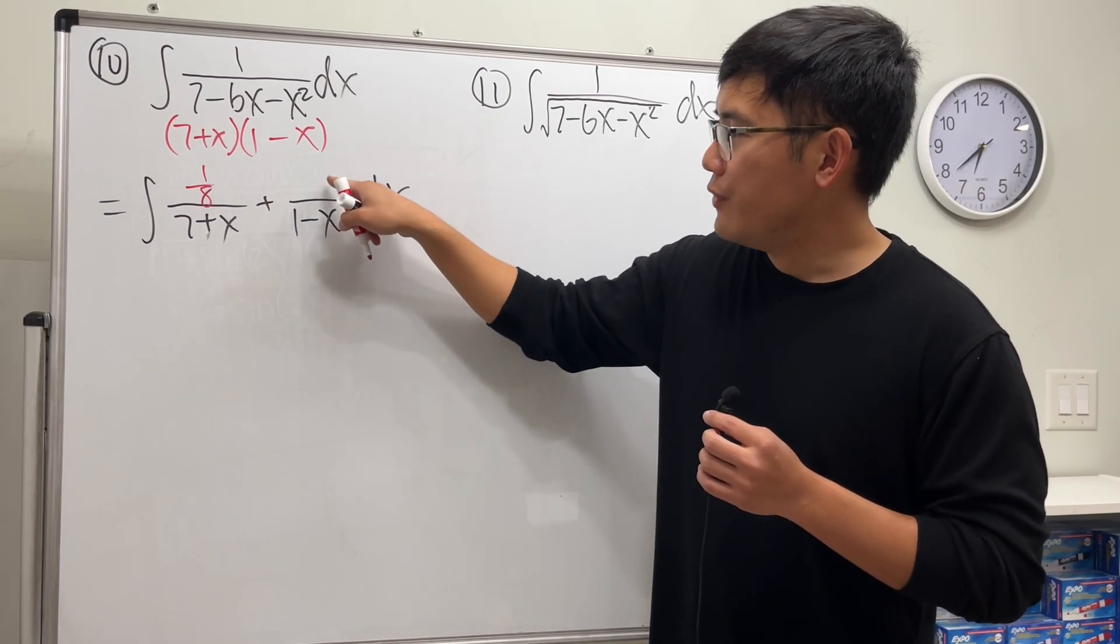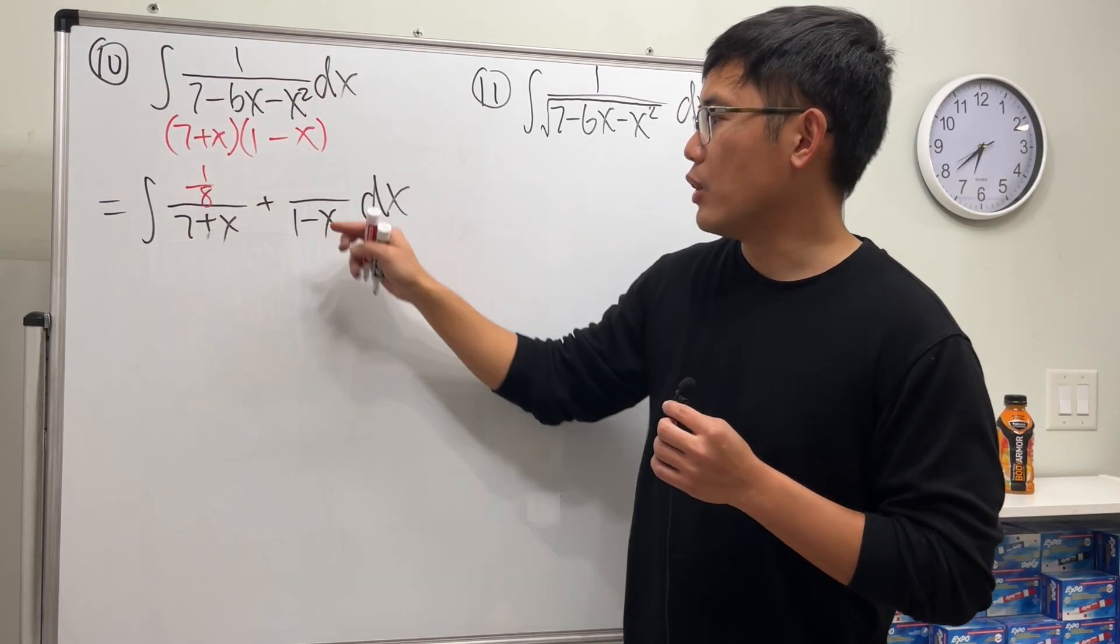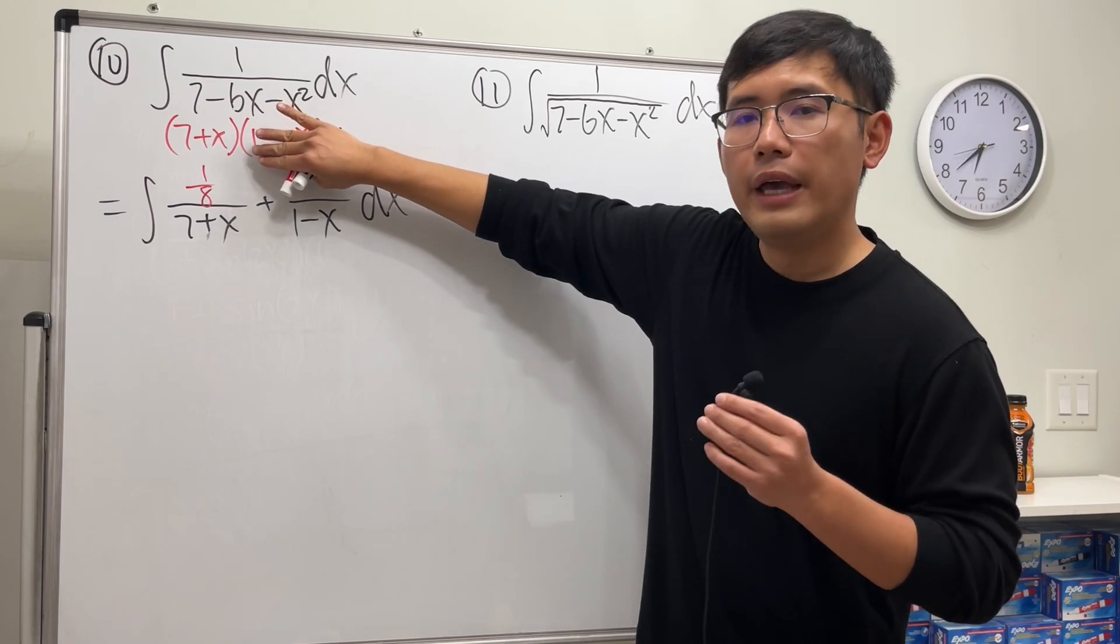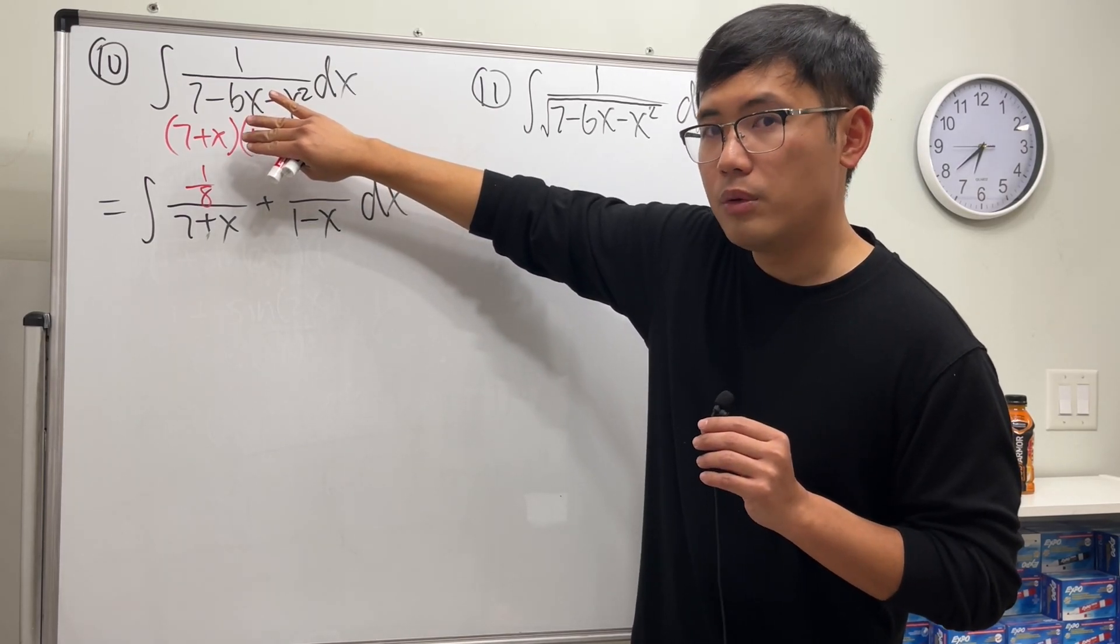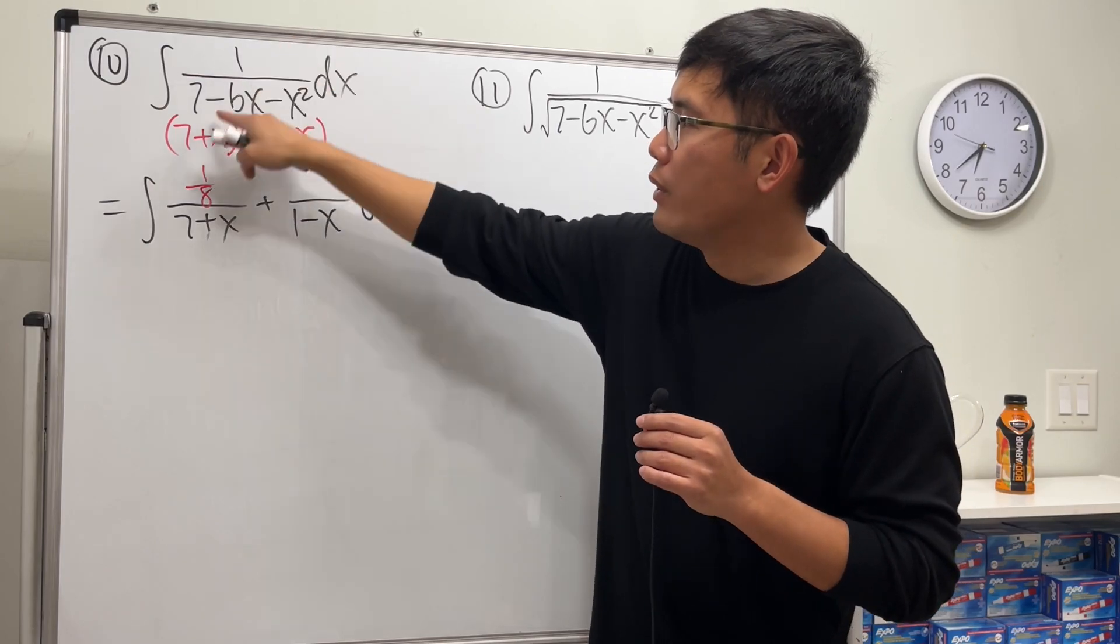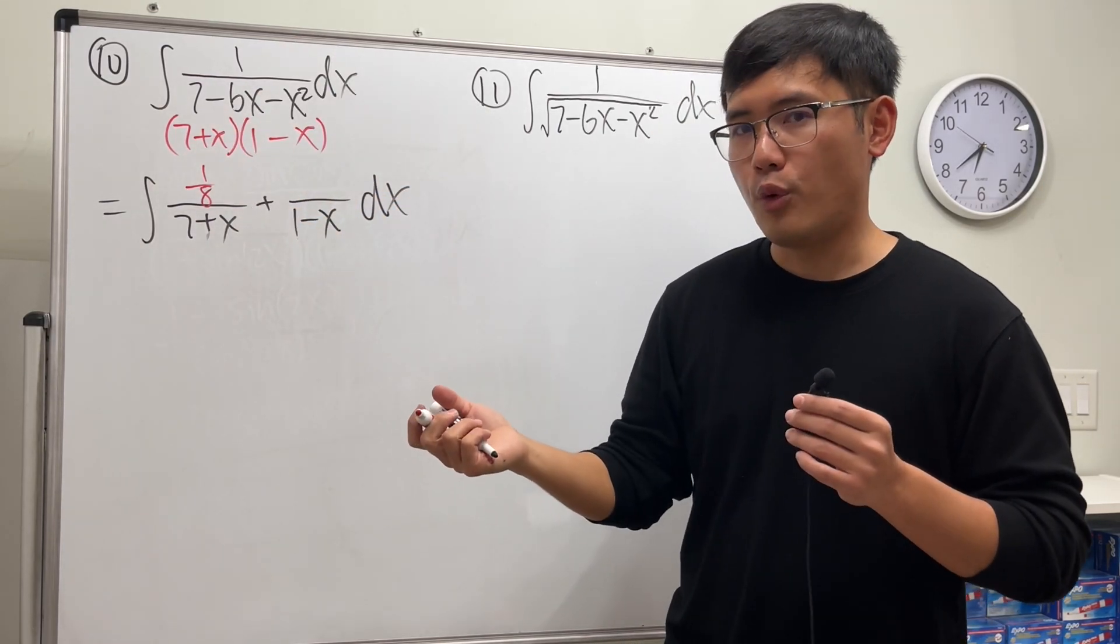Let's try another one to figure this out. We go back to the original, we cover the same denominator. To make 1 minus x equals 0, x has to be 1. We put 1 in here: 1 over 7 plus 1, we get 1 over 8.